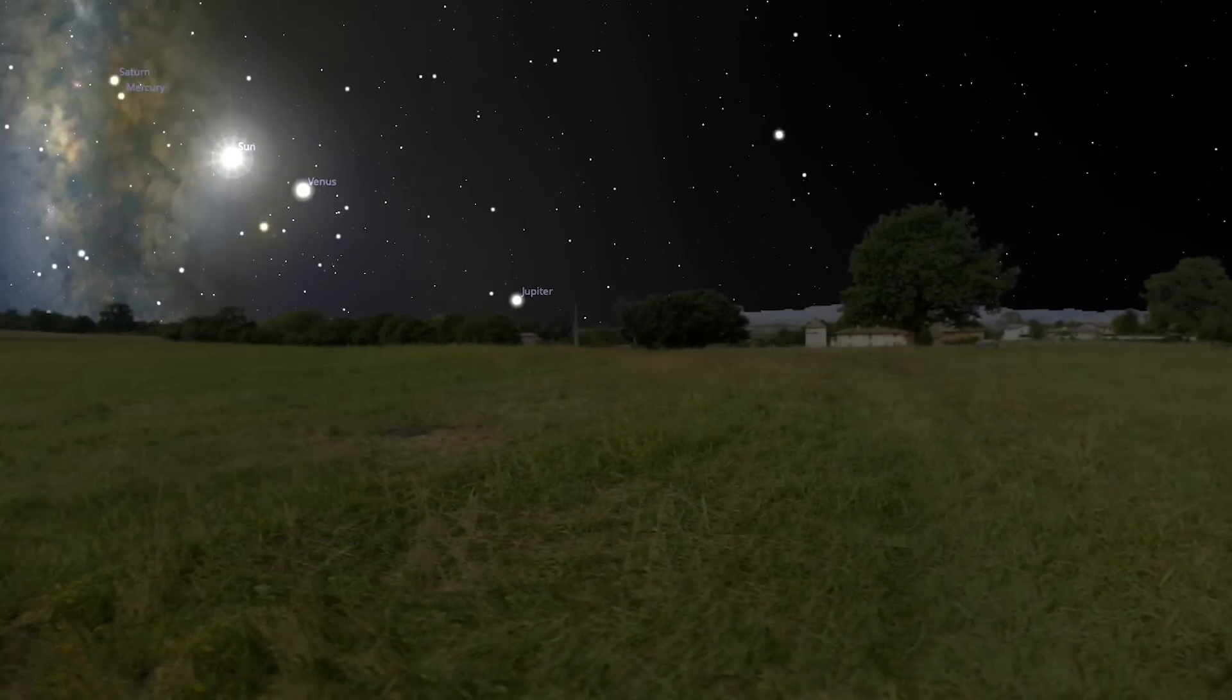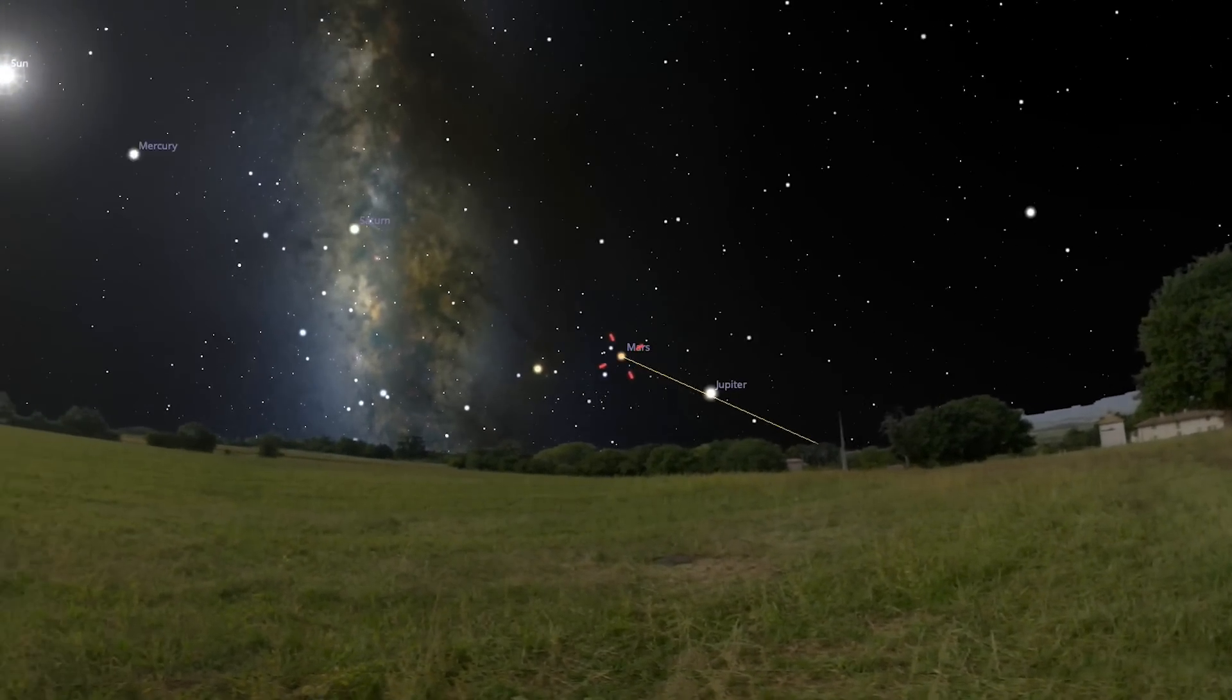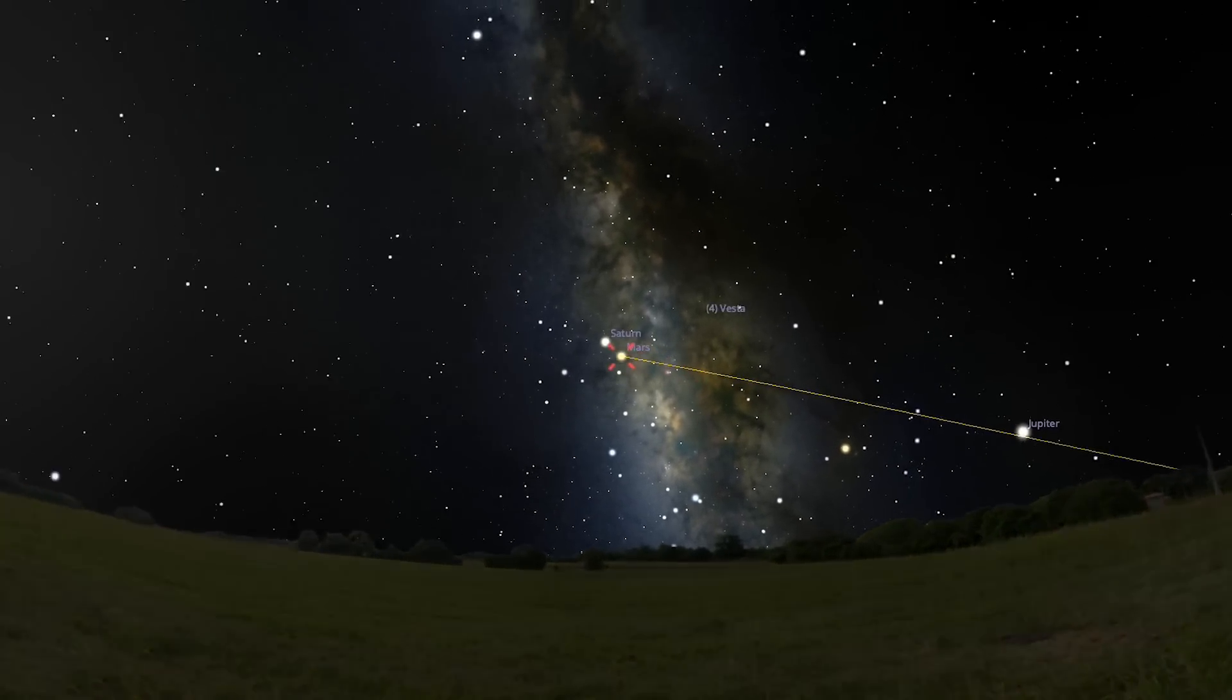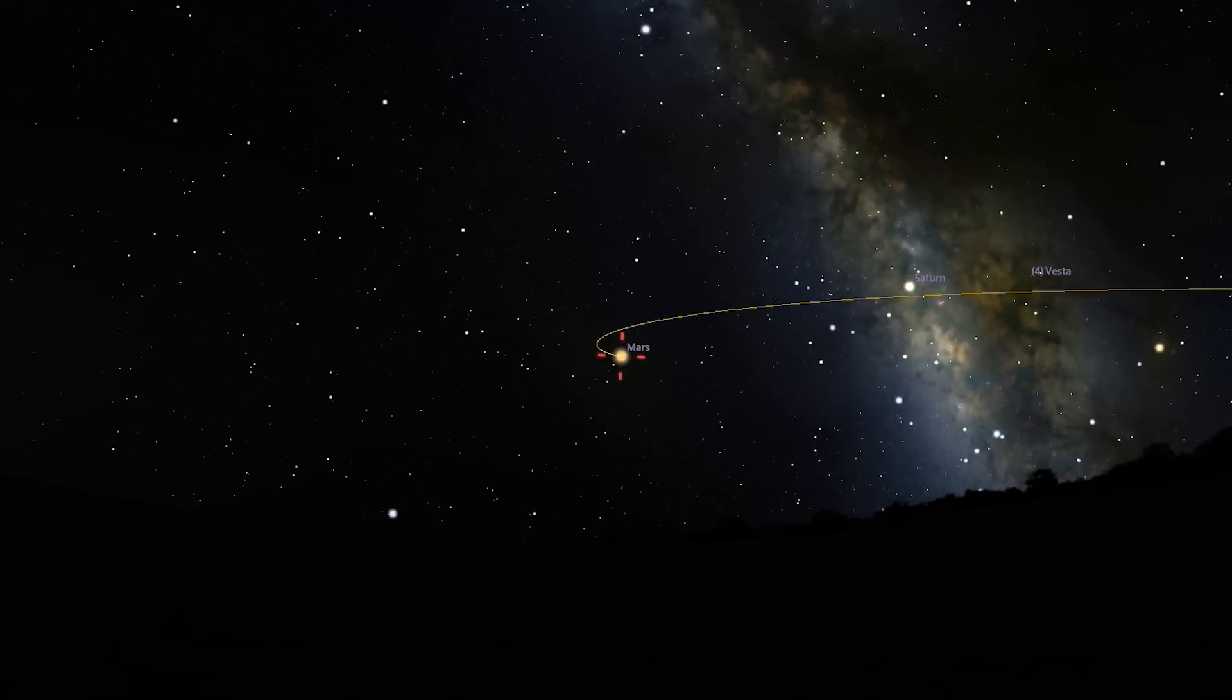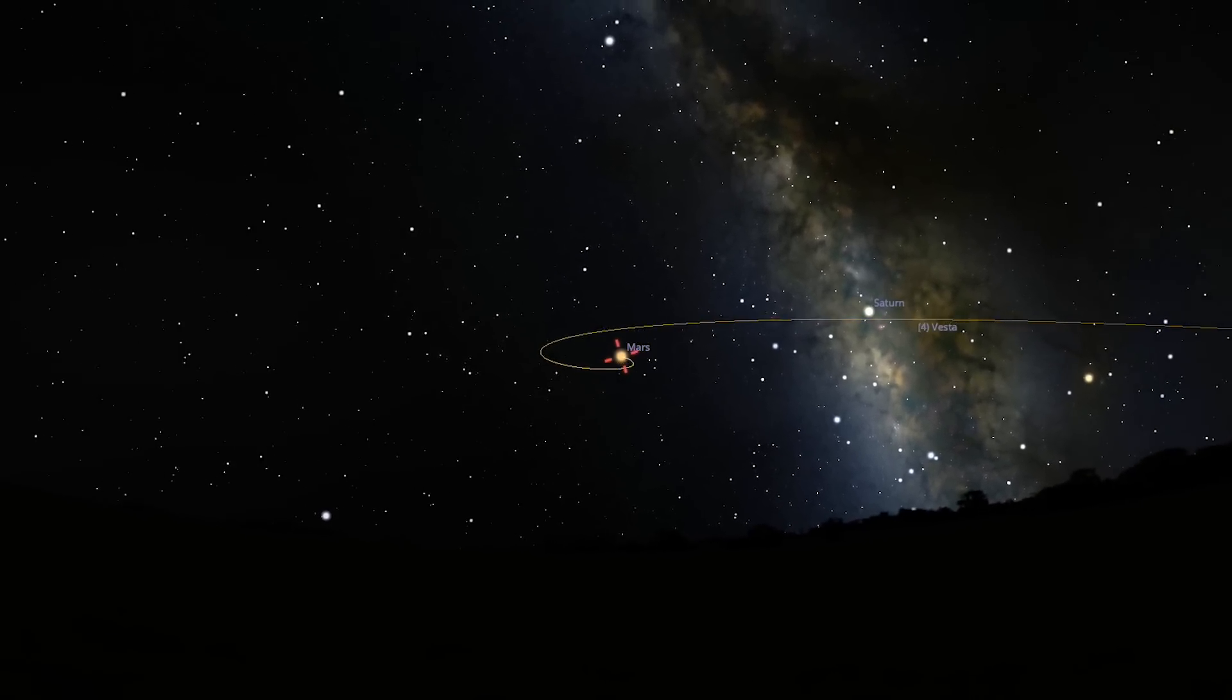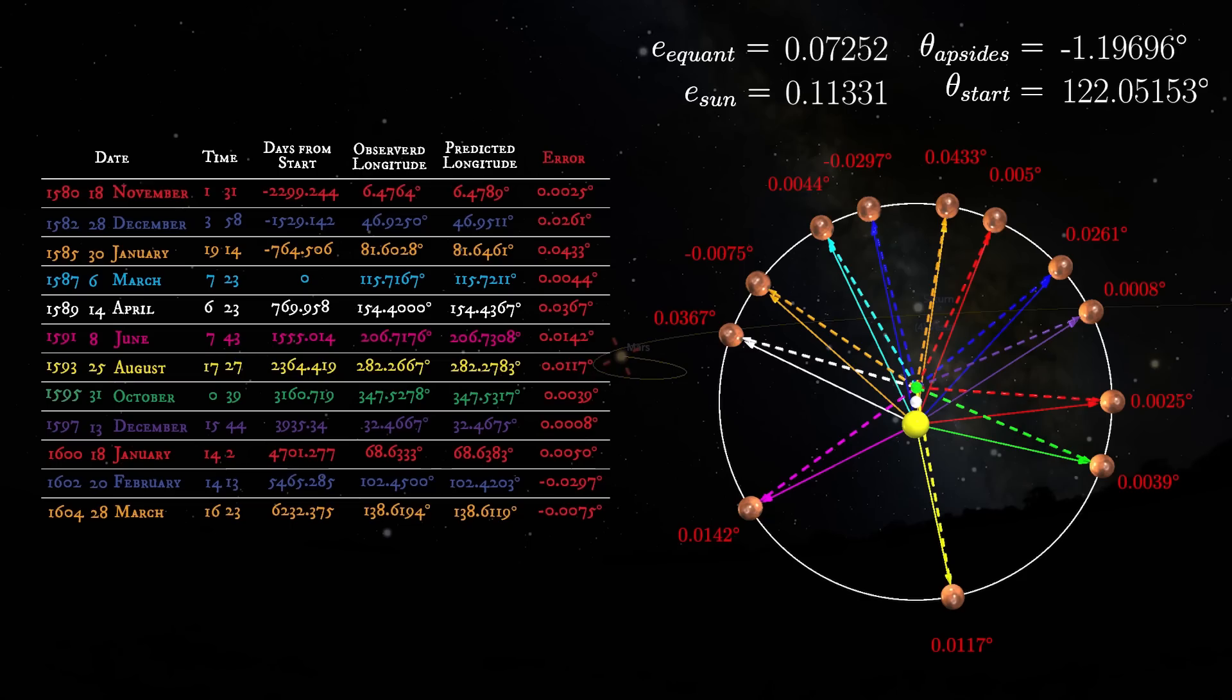At this point, most astronomers before Kepler would have declared victory and moved on. For most of its history, astronomy was about making accurate predictions, such as when the next eclipse would occur. Kepler's model did this incredibly well for the retrograde motions of Mars, predicting when and at what angle in an overhead view Mars would be in opposition.